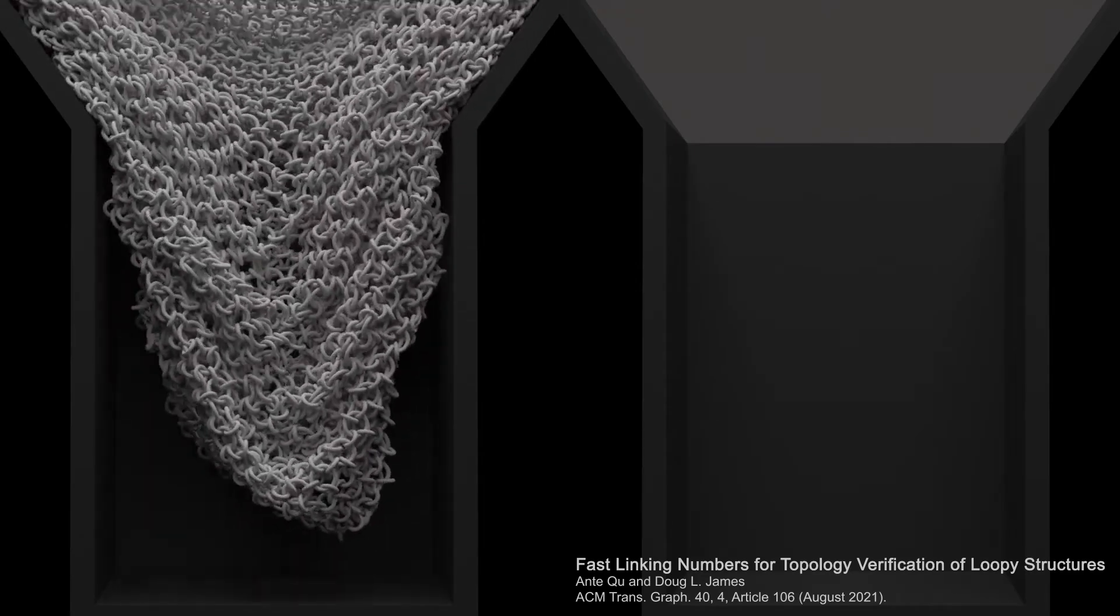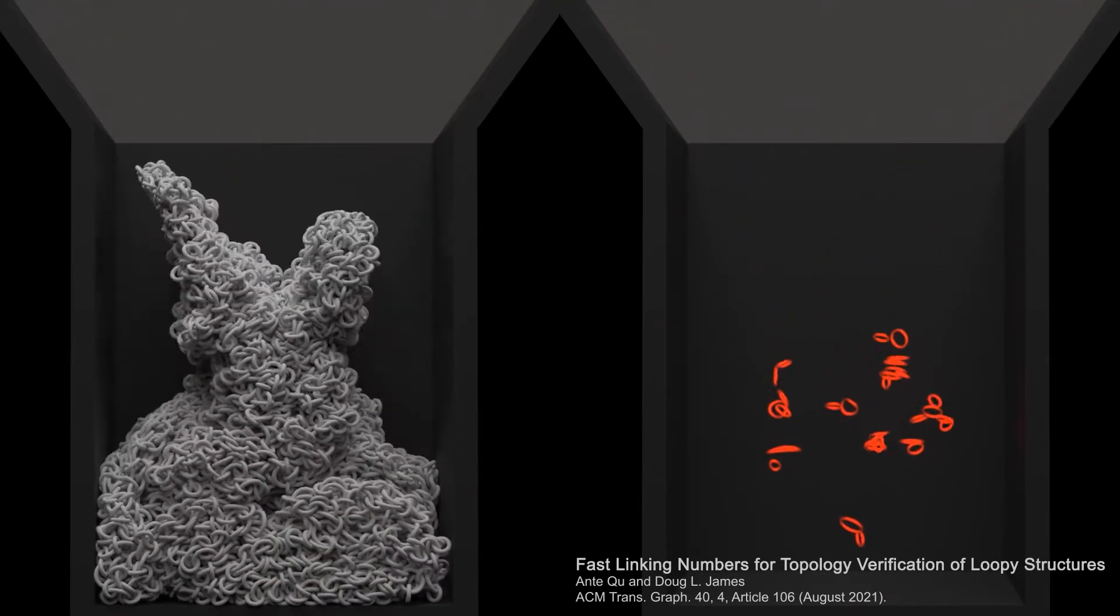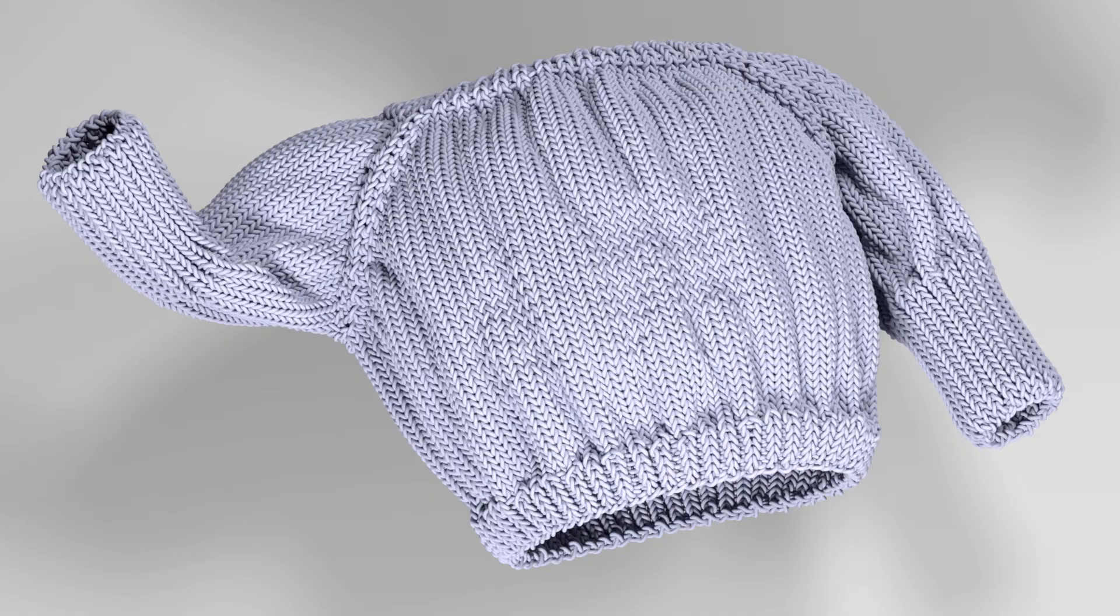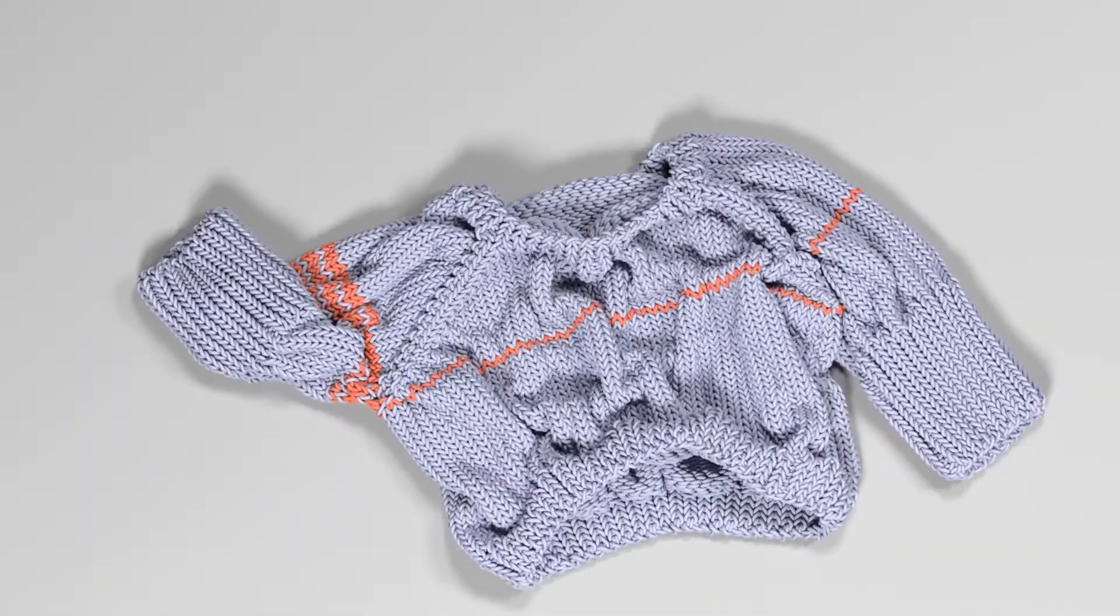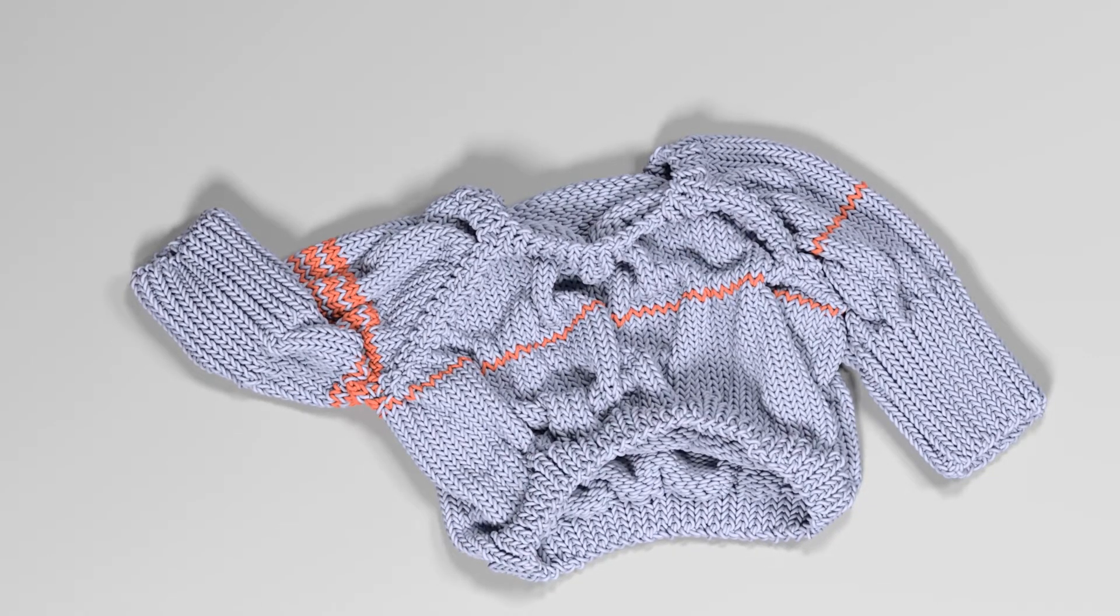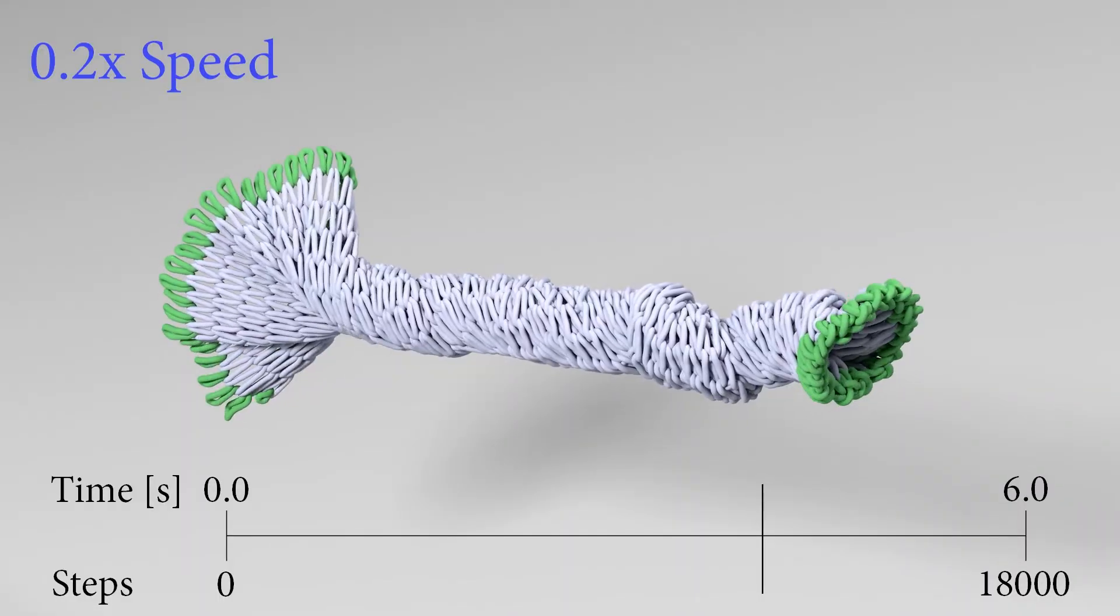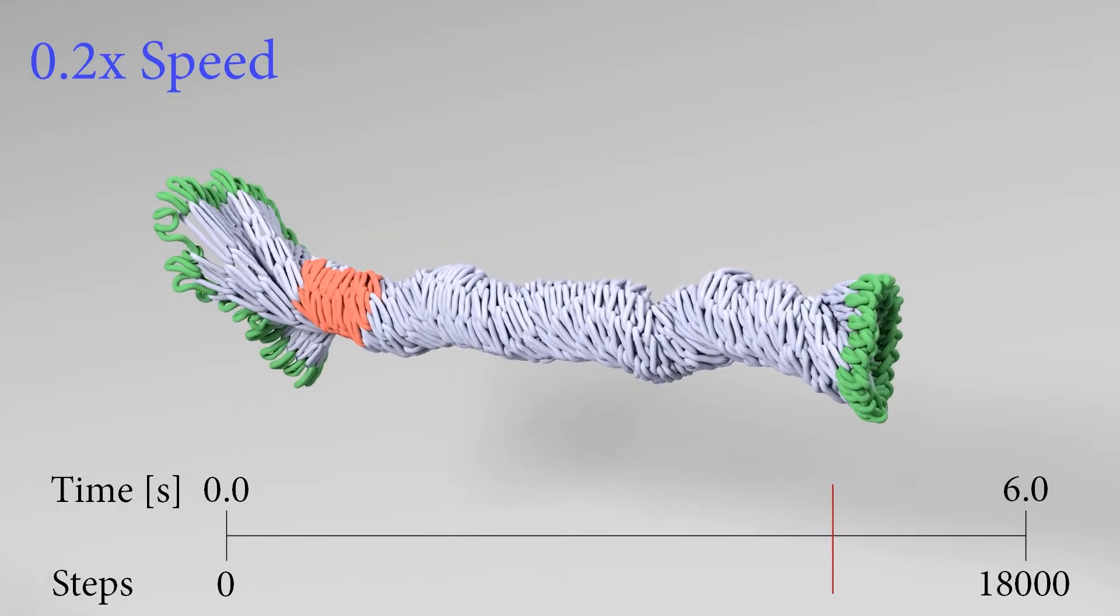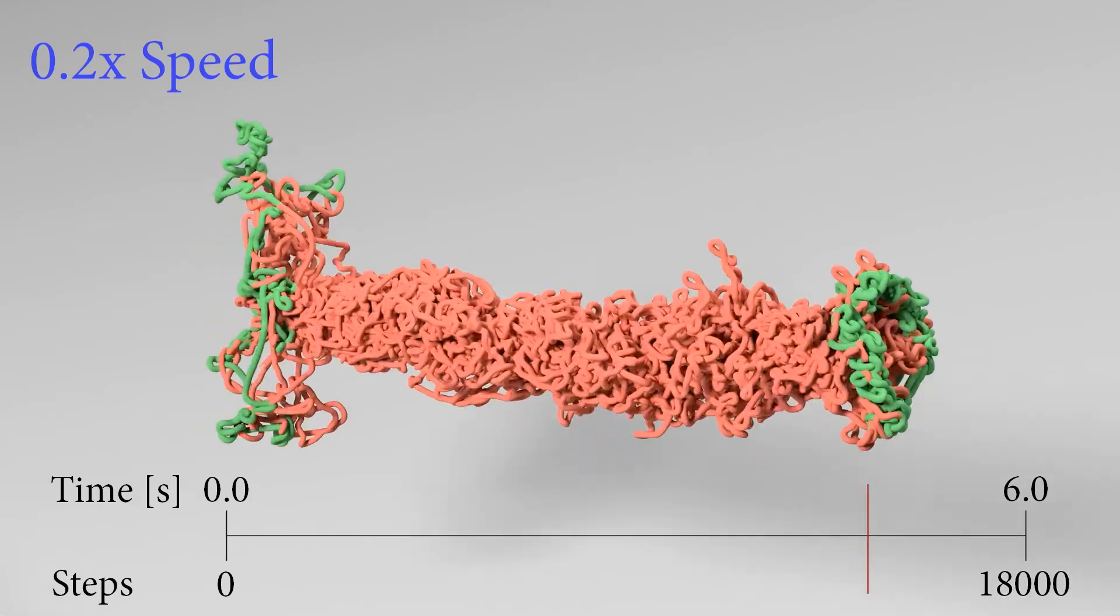At this year's SIGGRAPH, we have a paper on fast linking numbers that can help detect pull throughs of loops, such as this chain mail, but also in yarn level cloth where you have two rows of a knitted sweater that pull through. You can detect this change in their linking number and verify the correctness of the simulation. This works in really challenging scenarios too, and you don't have to wait for it to blow up to find out.